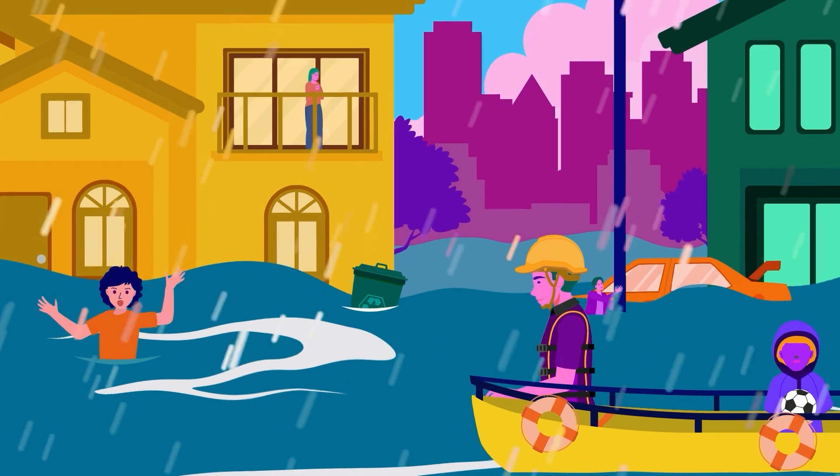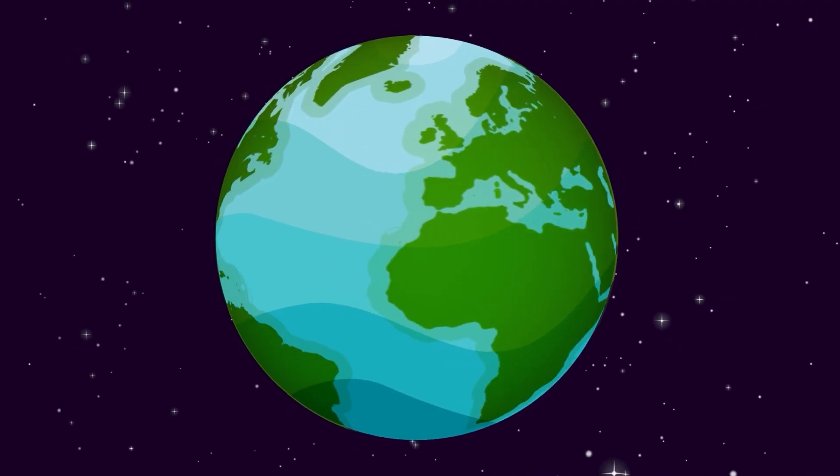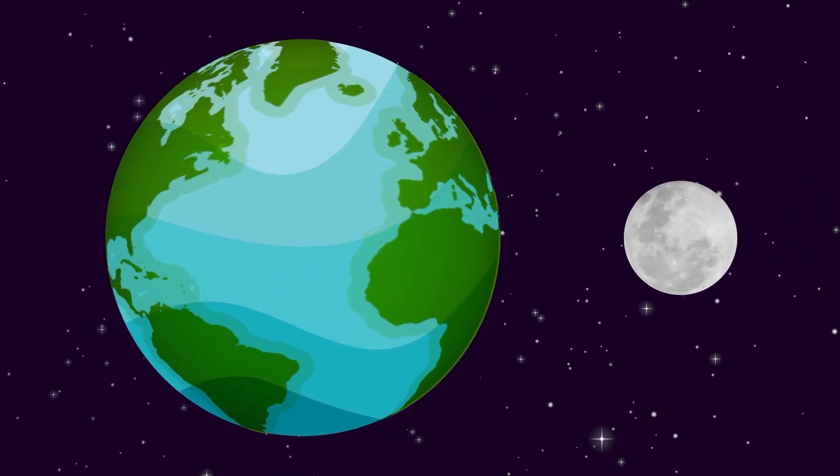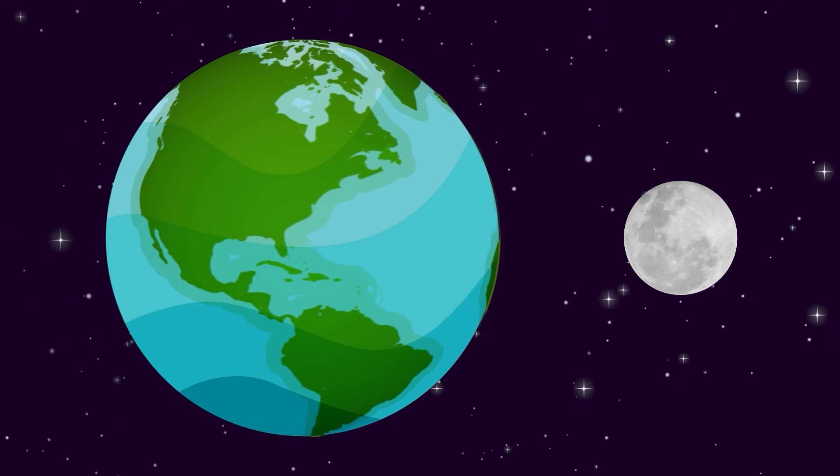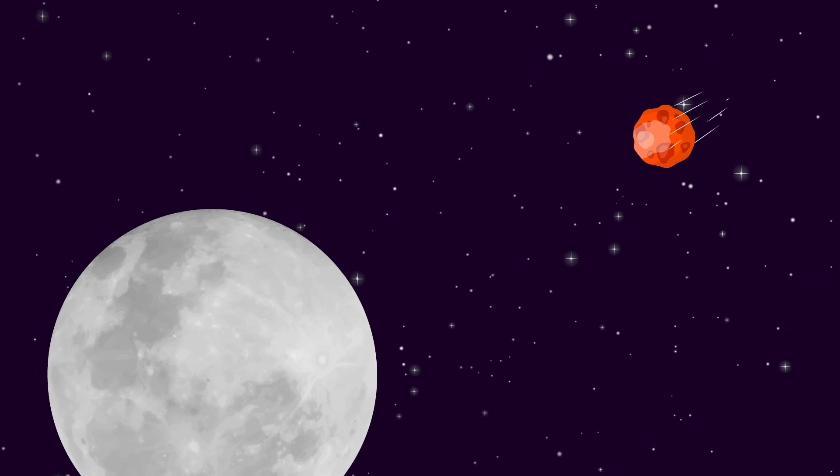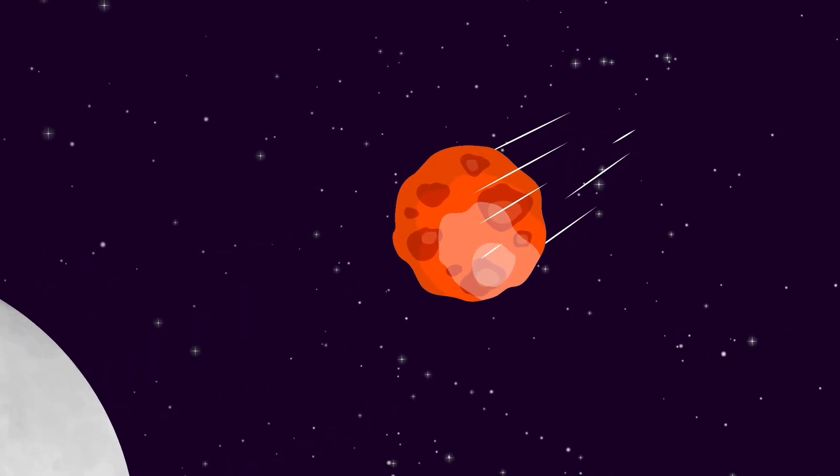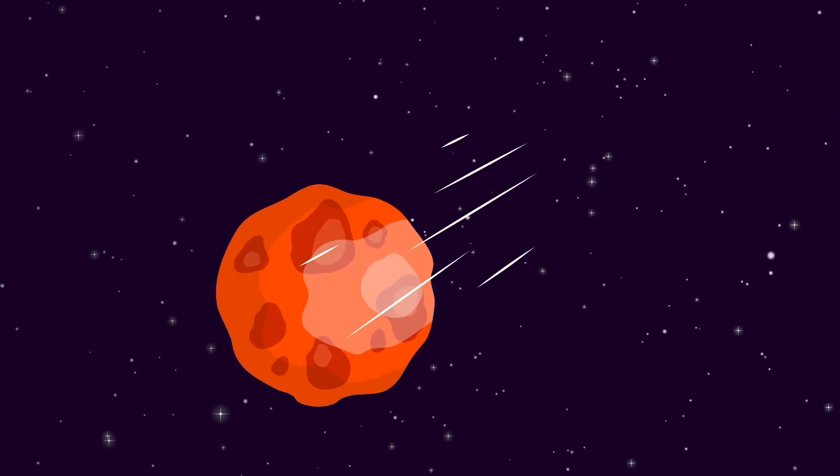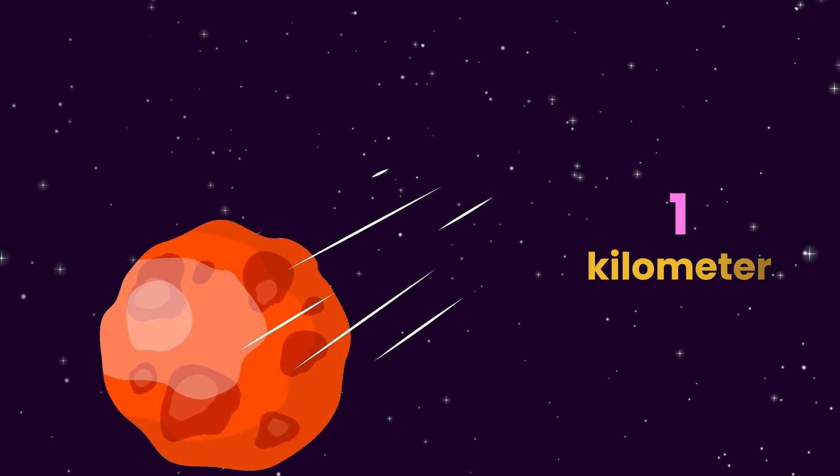So our moon disappearing doesn't sound so great. But there's no reason to worry, right? There's no way our moon could actually disappear, is there? Not quite. You see, one instance where our moon would cease to exist would be if it were hit by a massive asteroid. Actually, it wouldn't even need to be massive. An asteroid about a kilometer in diameter would be enough to blow the moon into pieces.